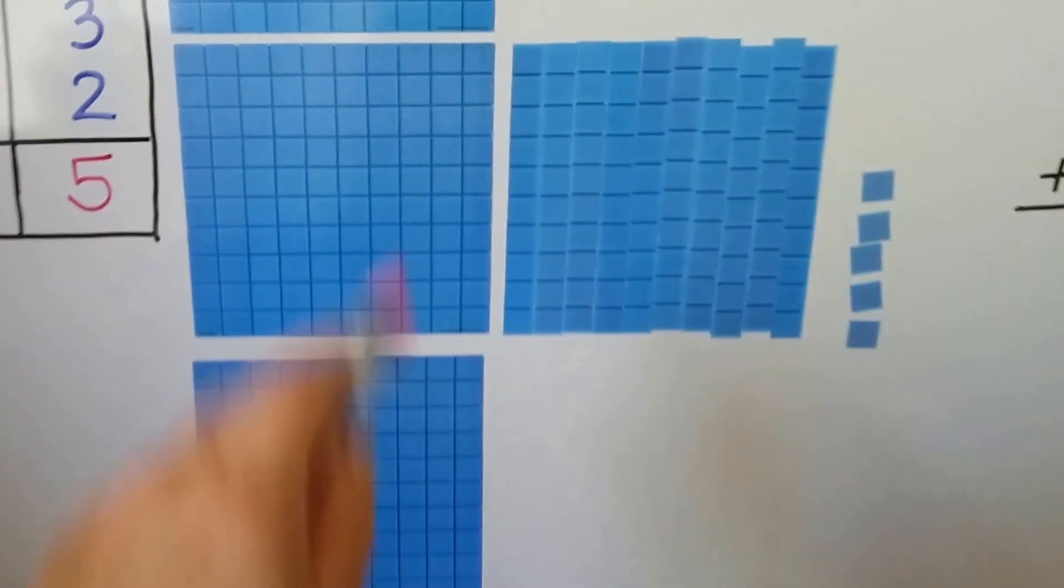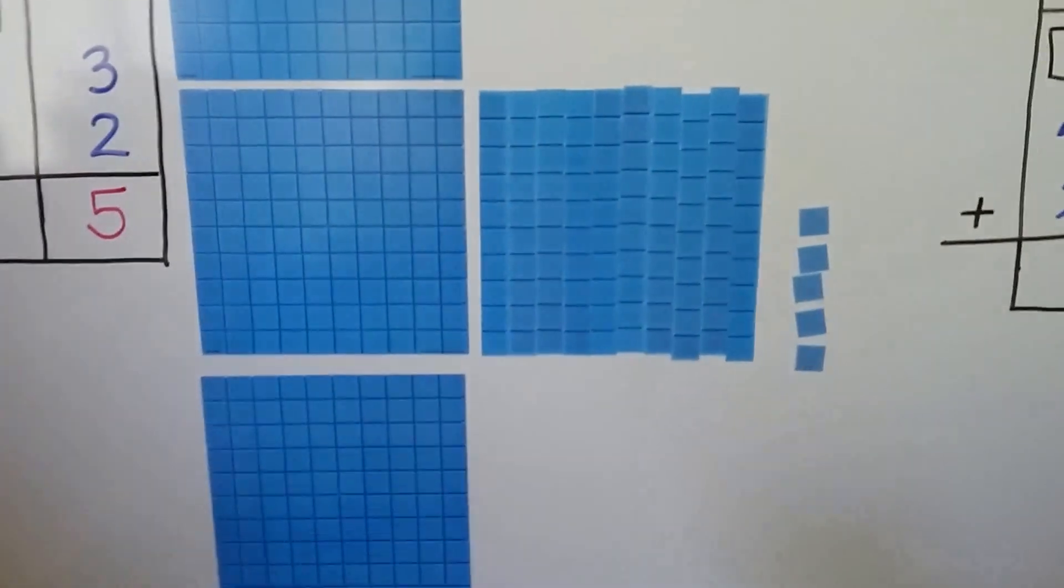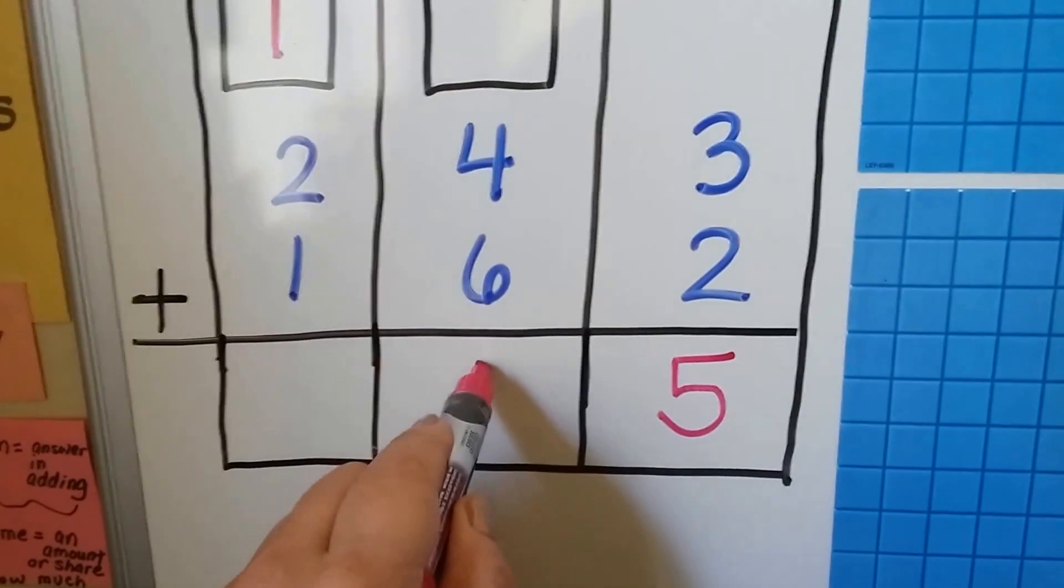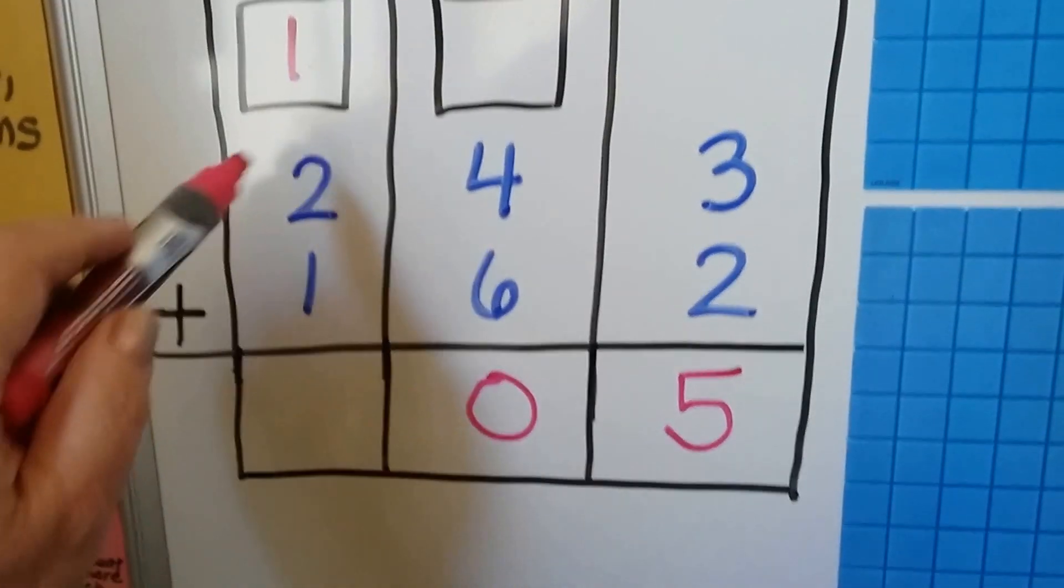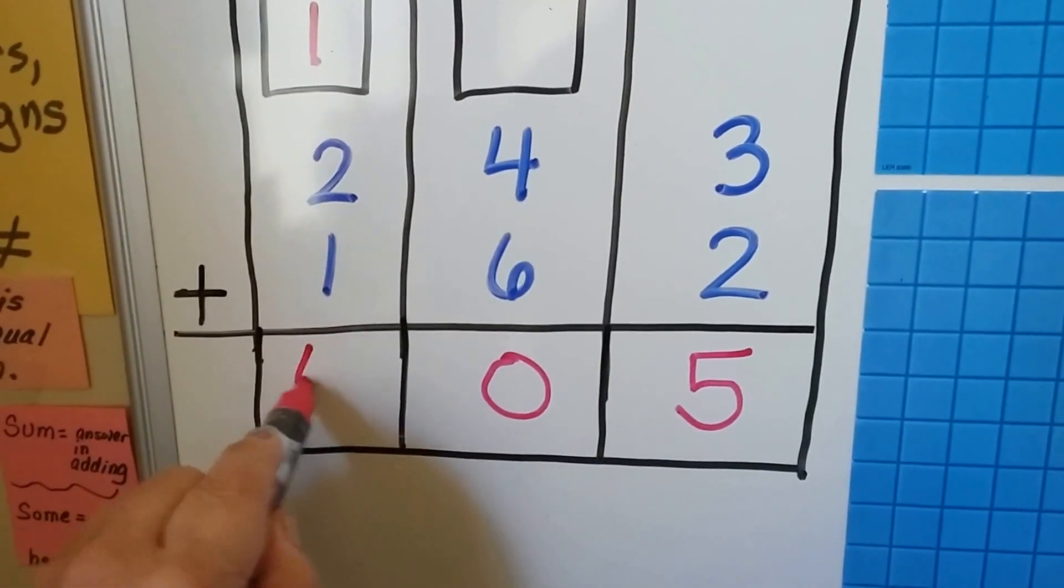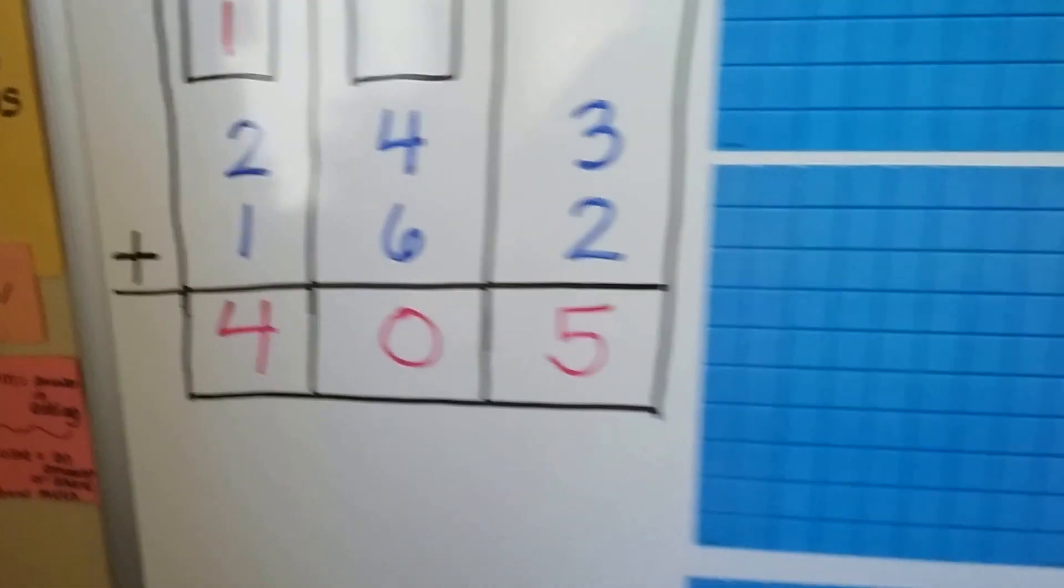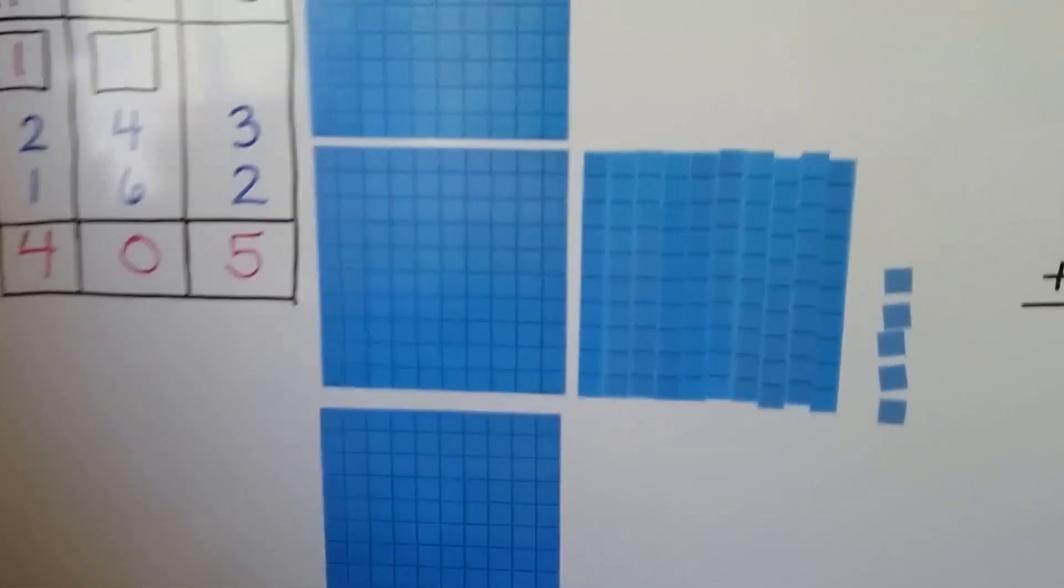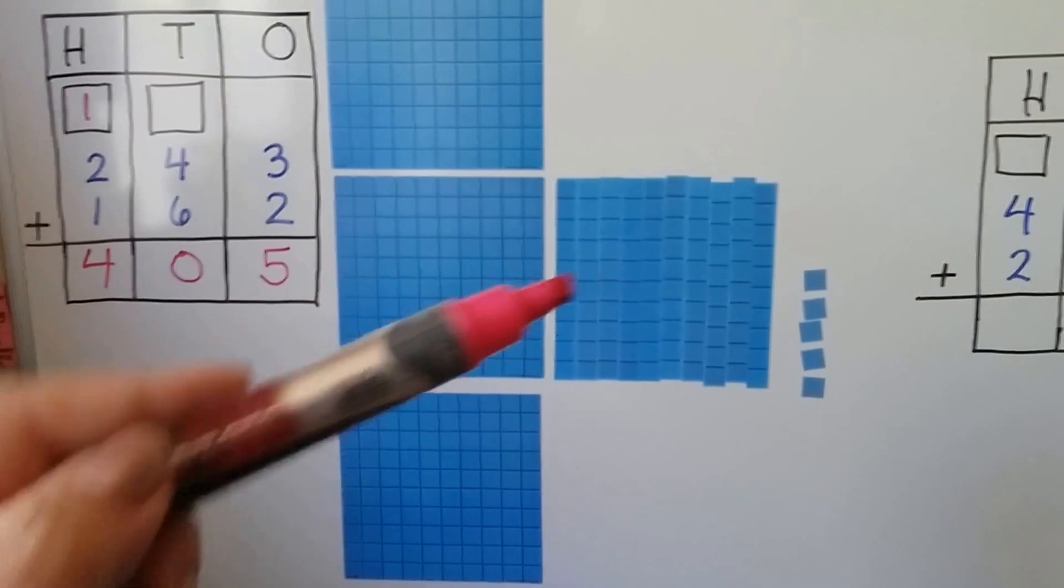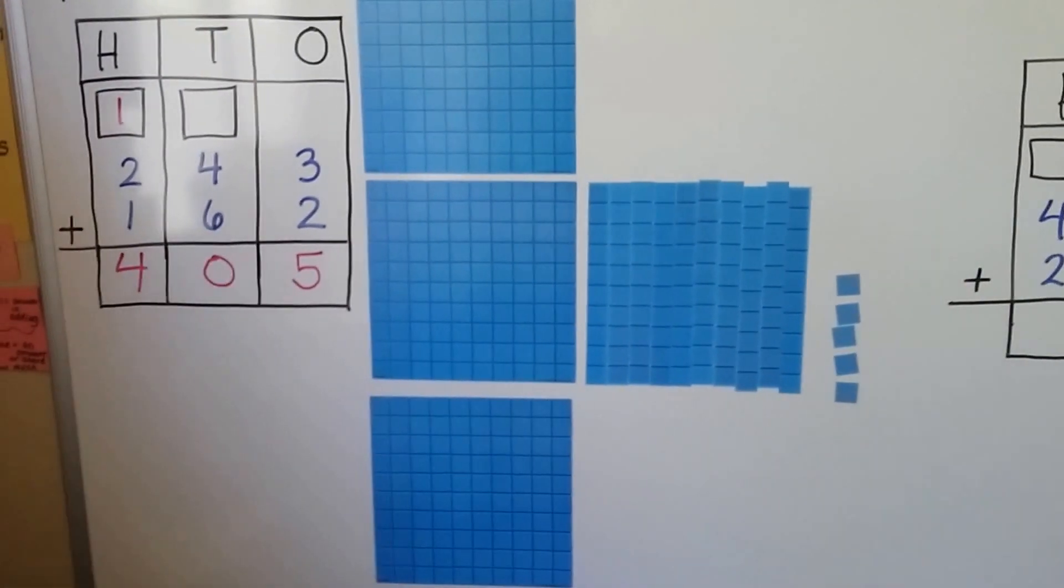Now, how many tens do we see? None. We turned them into a hundred, didn't we? So we put the one over here. We have zero tens now. Here's the hundred we made. We have one, two, three, four, five hundred. And when we step back and look at what we made, we've got 100, 200, 300, 400, and five ones, just like we did there.